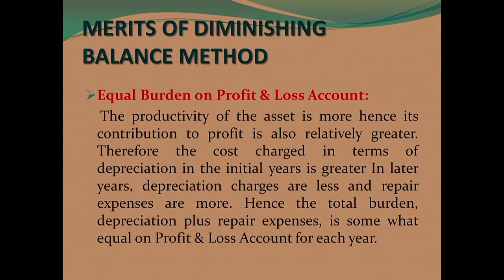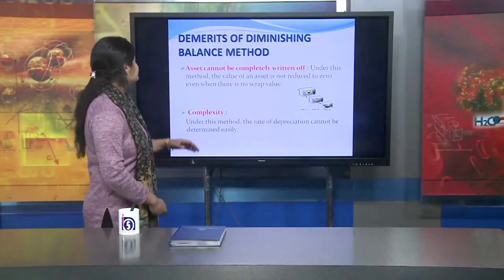The merits of the Diminishing Balance Method include equal burden on the Profit and Loss account. The productivity of the asset is more in the initial years, so its contribution to profit is relatively greater. Therefore, the cost charged as depreciation in initial years is greater. In later years, depreciation is less but repair and maintenance expenses are more. Hence, the total burden of depreciation plus repairs expense remains more or less equal on the P&L account throughout the asset's life.